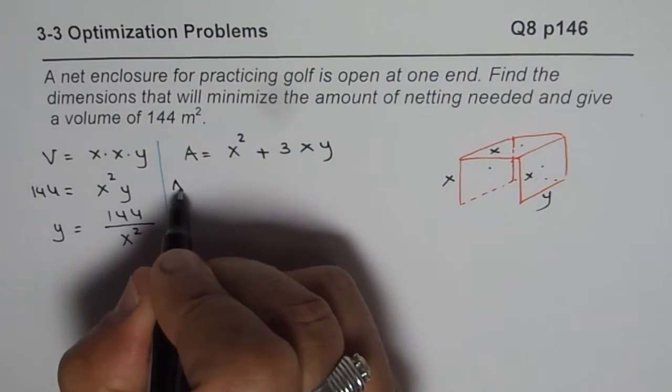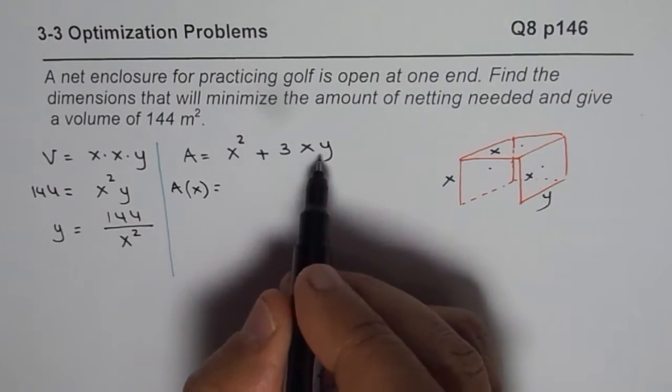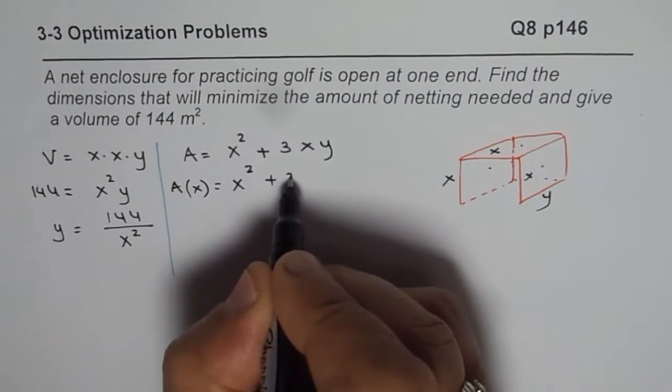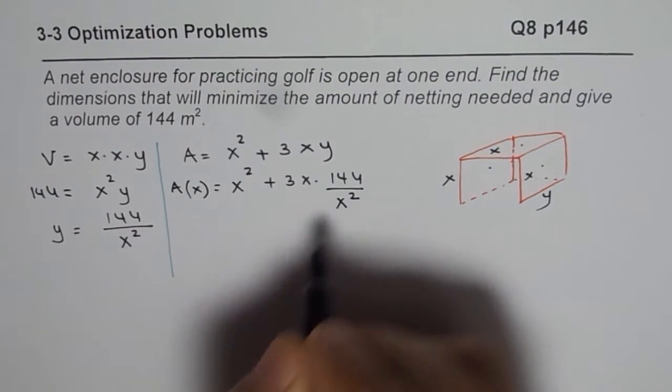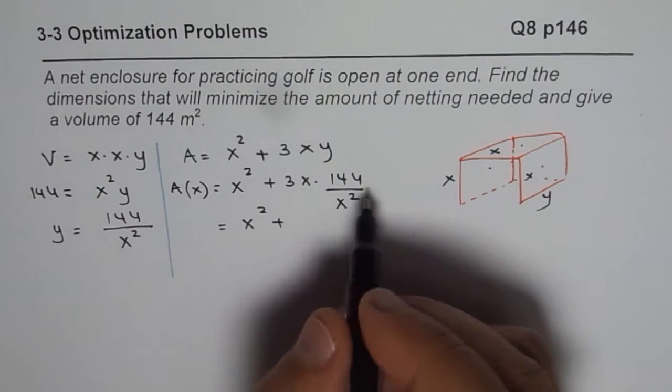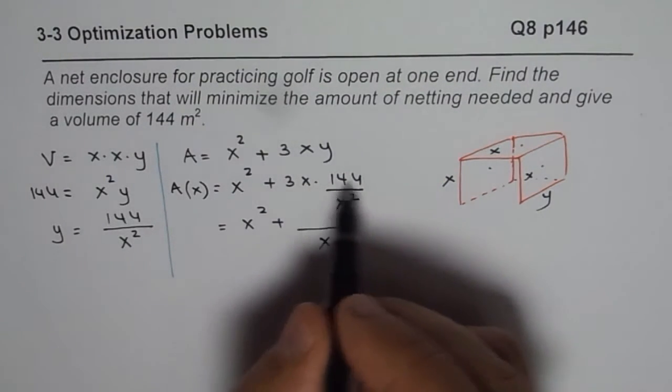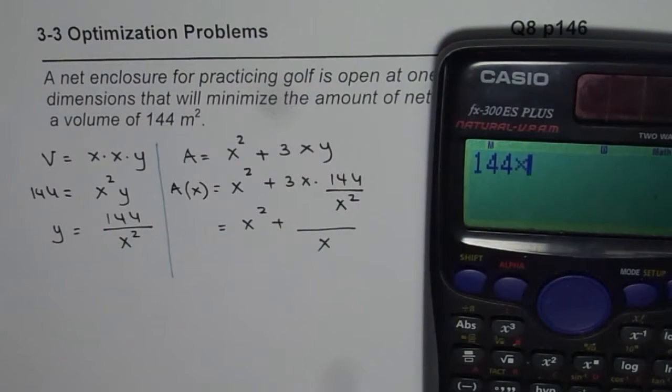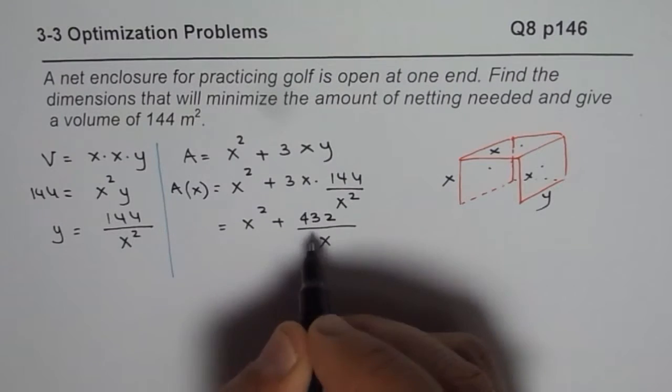Now that's the total area. Now we should find this area in terms of variable x, so we can substitute y with 144 over x square. So what we get here is x square plus 3 times x times 144 over x square. That can be simplified. And we can write this as x square plus 3 times 144 over x. So let's multiply this by 3, we can use the calculator. So it is 144 times 3 equals 432, so we have 432 over x.